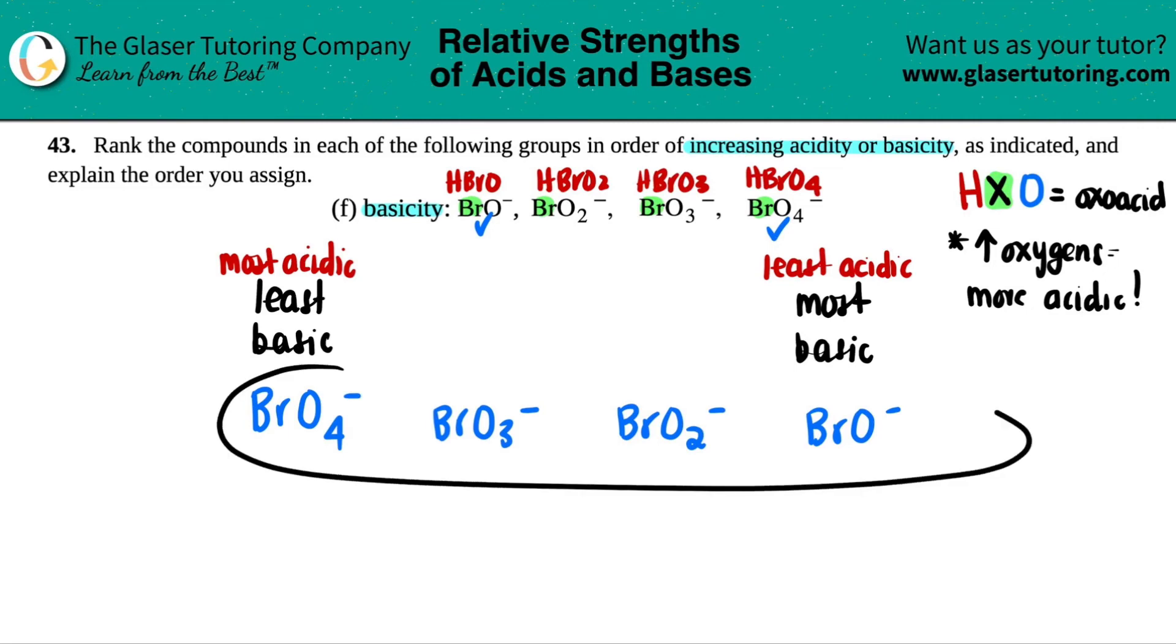Now we just have to put our greater than or less than sign, but remember, we're going from least to most. So BrO₄⁻ would be less basic than BrO₃⁻, which would be less basic than BrO₂⁻, which is less basic than BrO⁻.